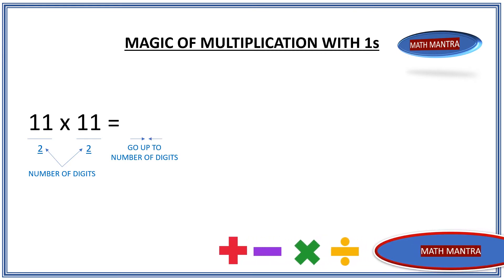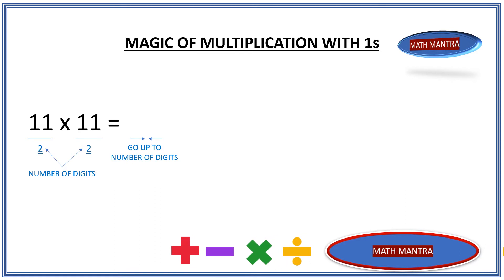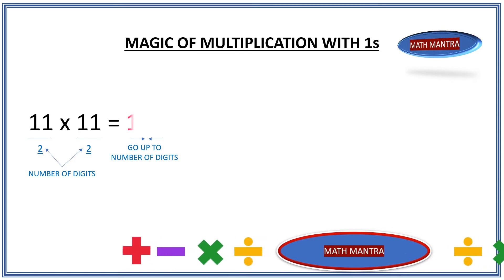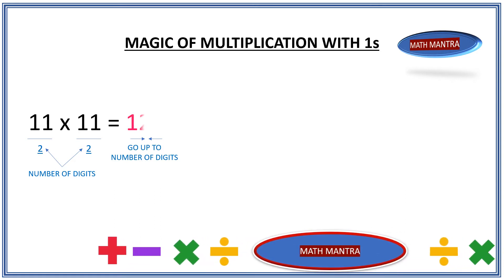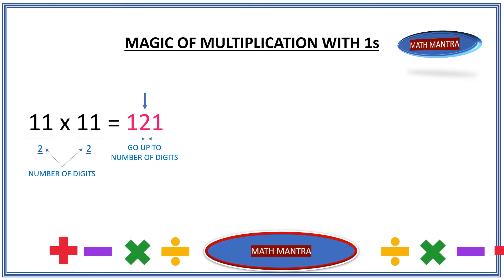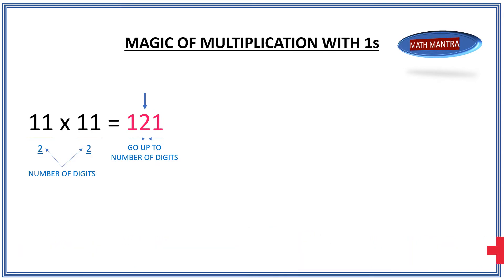So let's start applying it. We start with 1, go all the way to the number of digits — in this case 2 — and then come back down all the way to 1, which gives us 121.